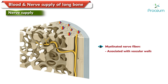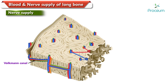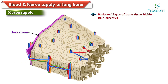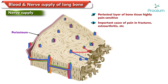Other myelinated nerve fibers have branched free fiber endings associated with the walls of intertrabecular marrow arterioles. Myelinated nerve fibers are usually associated with vascular walls but may also be associated with the connective tissue of the intertrabecular fat or marrow. The Volkmann's canals of the shaft receive nerve fibers from the overlying periosteum.